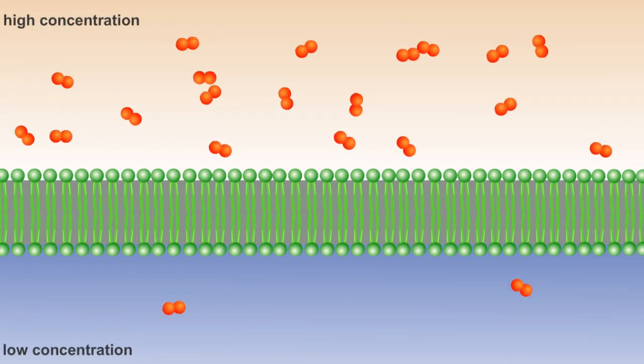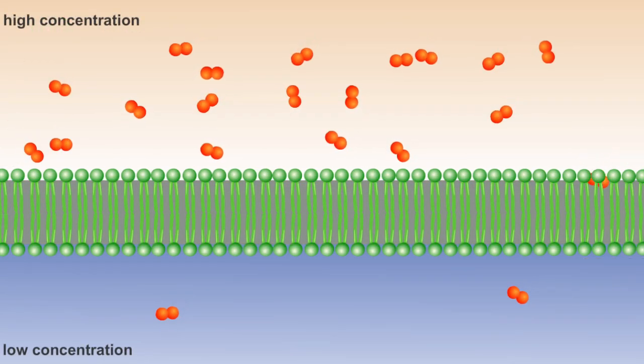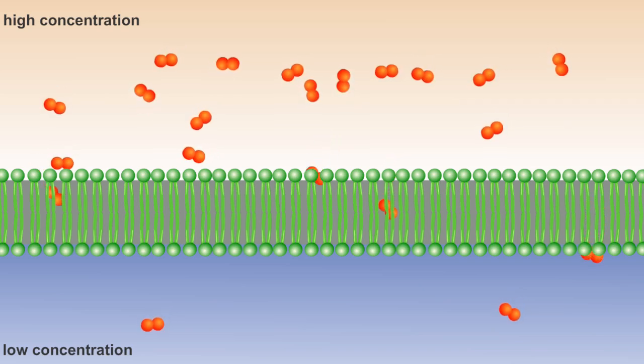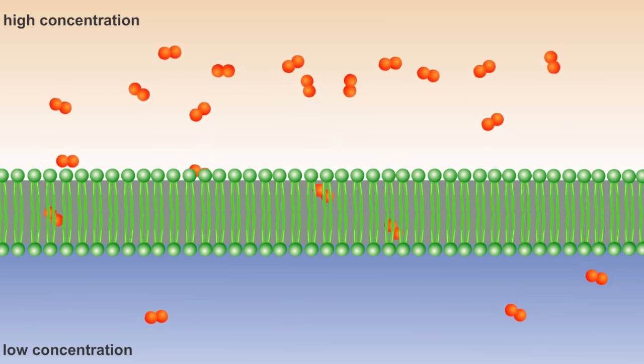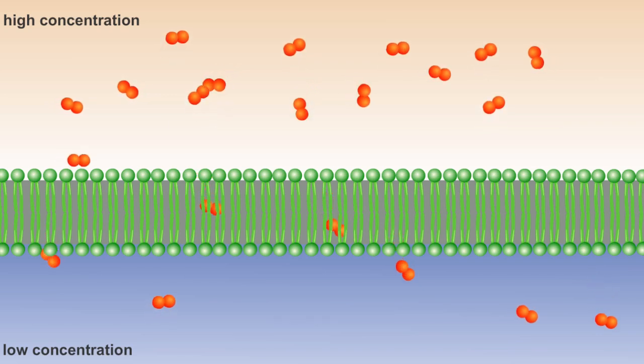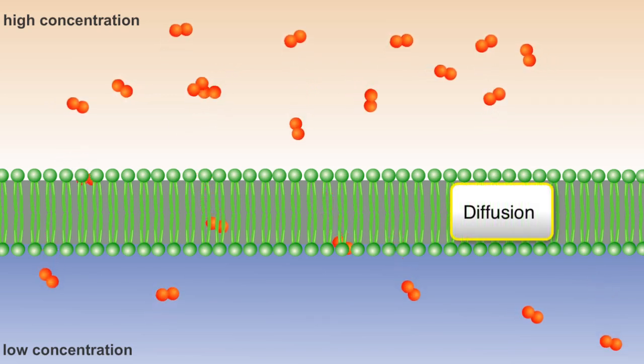In general, small, non-charged molecules such as oxygen or carbon dioxide can freely cross the membrane without an input of energy. They are able to slip between the heads of phospholipids and pass through the hydrophobic tails through a process known as diffusion.